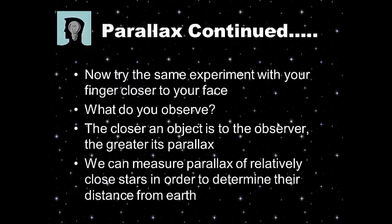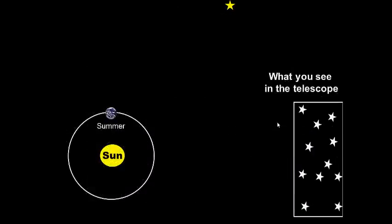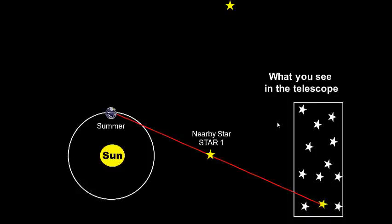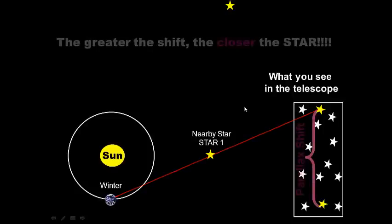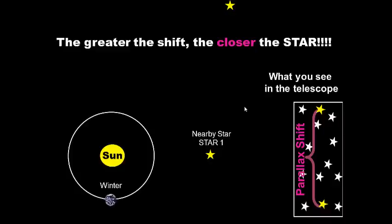We can measure the parallax of relatively close stars in order to determine their distance from Earth. Here's a nearby star we want to find the distance to — here's what it looks like in the night sky. Later in the year we look at that same star, and now it appears in a different position in the night sky. That is the shift — parallax is the apparent shift. The star didn't really move; it just looks like it moved. The greater the shift, the closer the star.